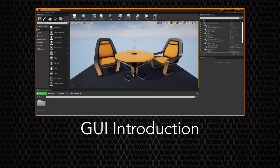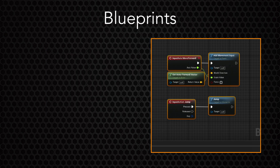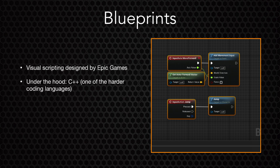Luckily, you don't need to know a coding language to begin Unreal Engine, because we have blueprints. Blueprints refer to the visual scripting designed by Epic Games. Instead of typing out a line of code, we'll be creating and connecting nodes together. Under the hood is one of the harder coding languages to learn and master: C++. If you were to accidentally click on any of these nodes too many times, Unreal Engine will attempt to open either Visual Studio or Xcode, depending on your operating system. This will show you what the node looks like written in C++, and it might just make you grateful that you don't have to learn that instead.